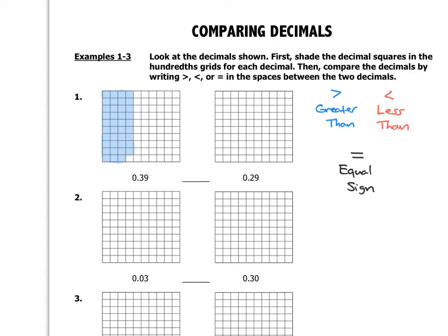Now I'll do the same with 0.29, which is 29 hundredths — shading 29 out of 100 squares: 10, 20, and 29. To compare, just ask which grid has more squares shaded. That would be the first grid, so 0.39 is greater than 0.29.